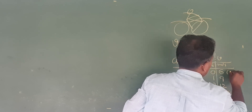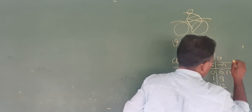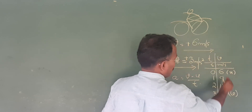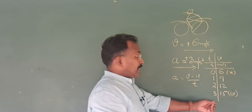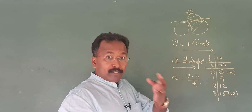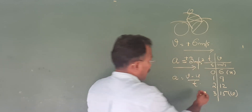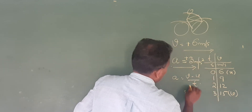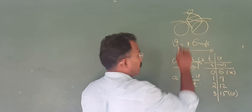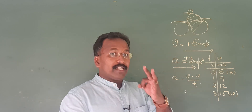v is the final velocity; u is the initial velocity. Now, 15 minus u by t — that is 9 divided by 3 — gives 3 meters per second squared. That means acceleration is 3 m/s².